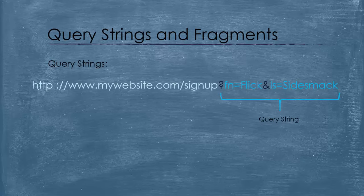There can be other parts, which are query strings and fragments. Query strings are a way of passing information from the client to the server, such as entering information in a user form input. They are preceded by a question mark and are encoded as key-value pairs delimited by an ampersand symbol. Here is an example of that.